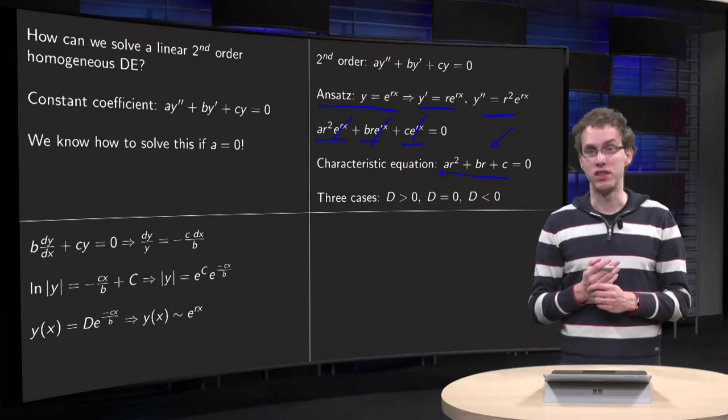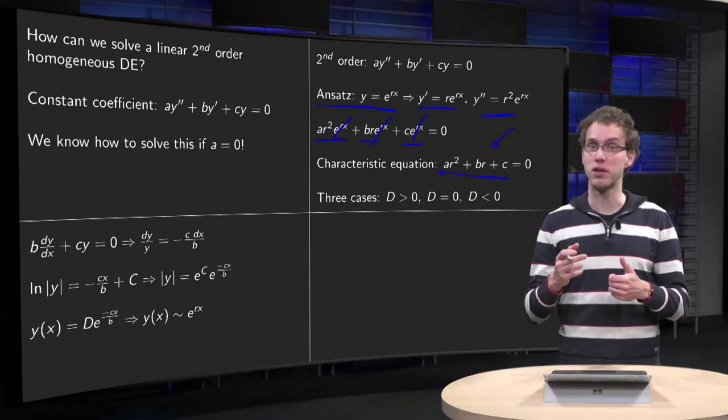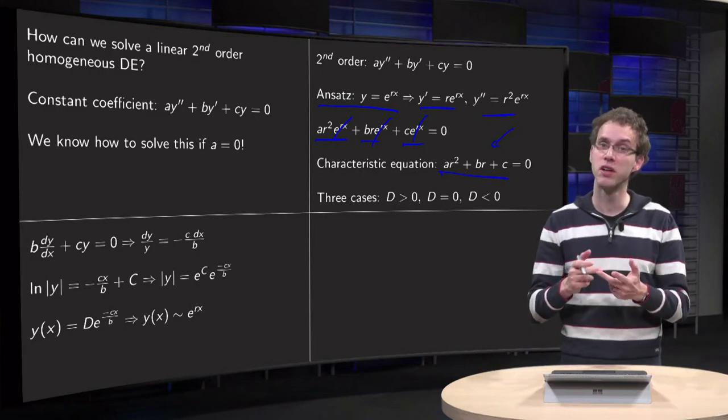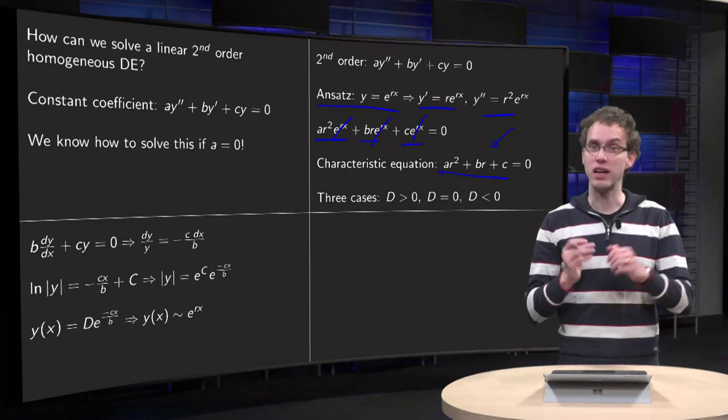Now for this characteristic equation we have three cases. The discriminant can be either positive, zero or negative. And we will do those three cases one by one.